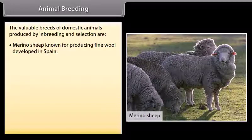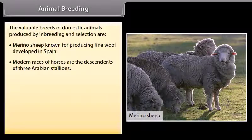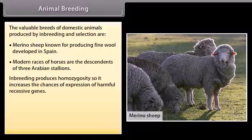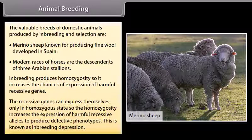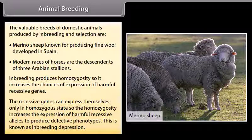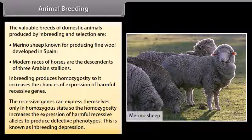Inbreeding refers to the mating of more closely related individuals within the same breed. The superior cows and bulls of the same breed are mated in pairs to get better progeny. Valuable breeds produced by inbreeding include Merino sheep, known for producing fine wool and developed in Spain, and modern races of horses descended from three Arabian stallions.